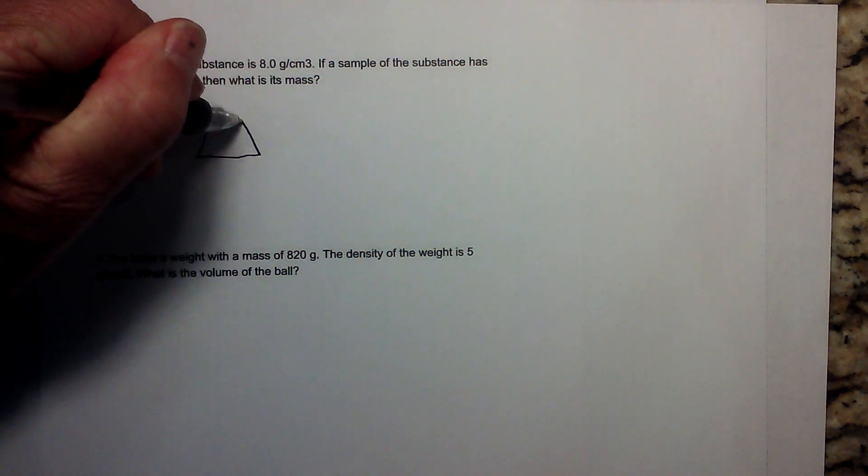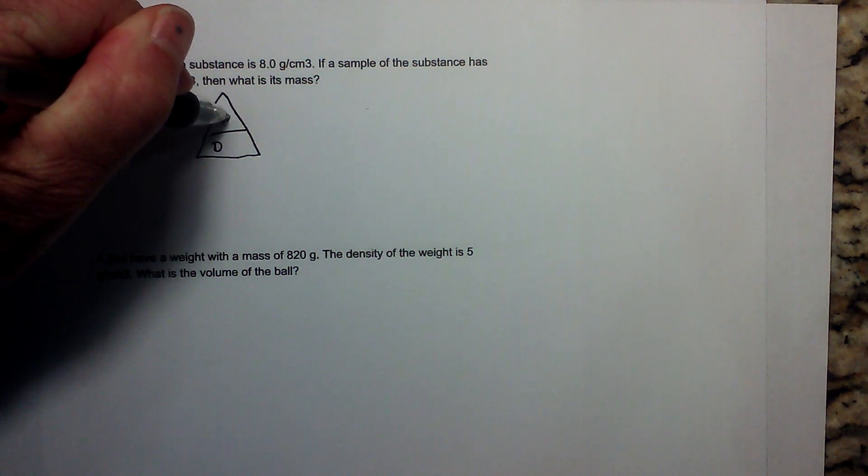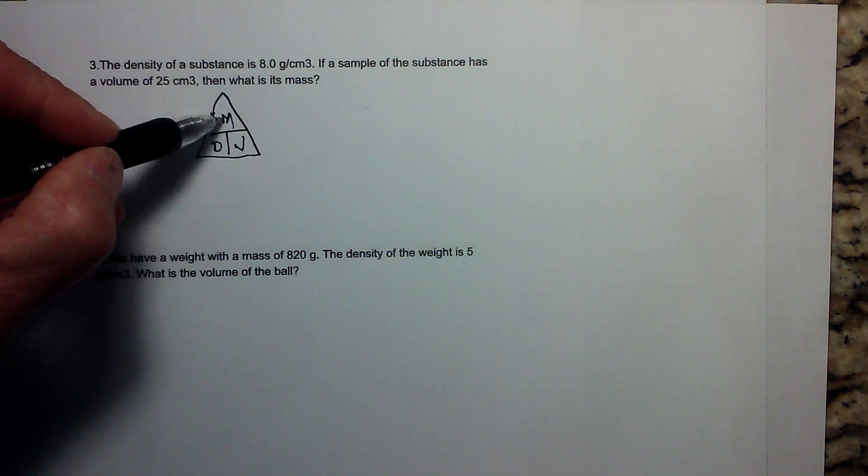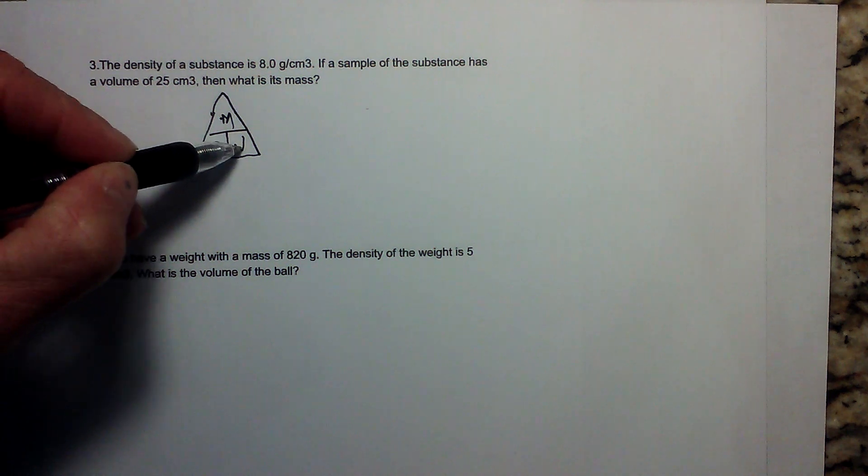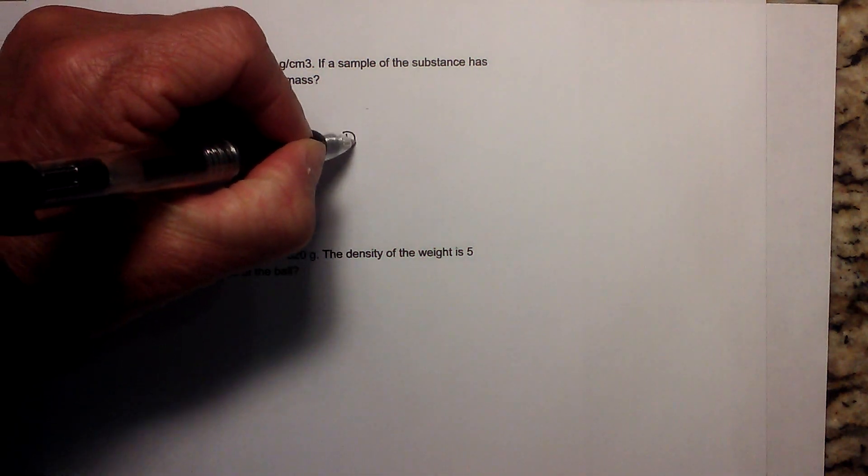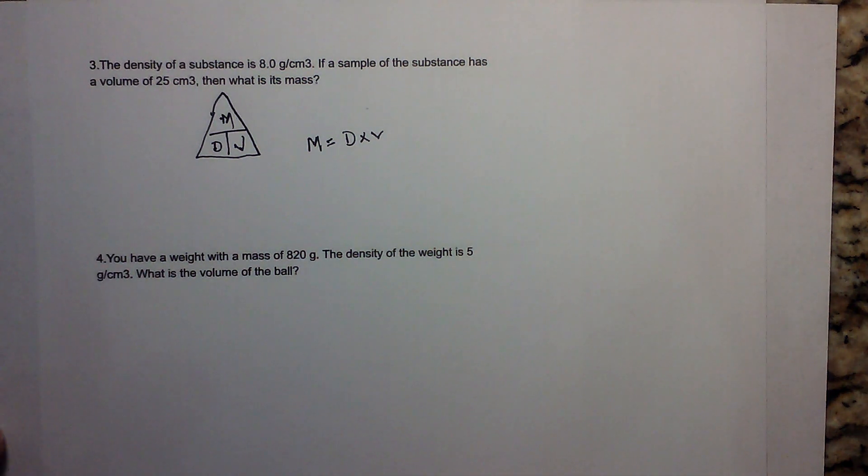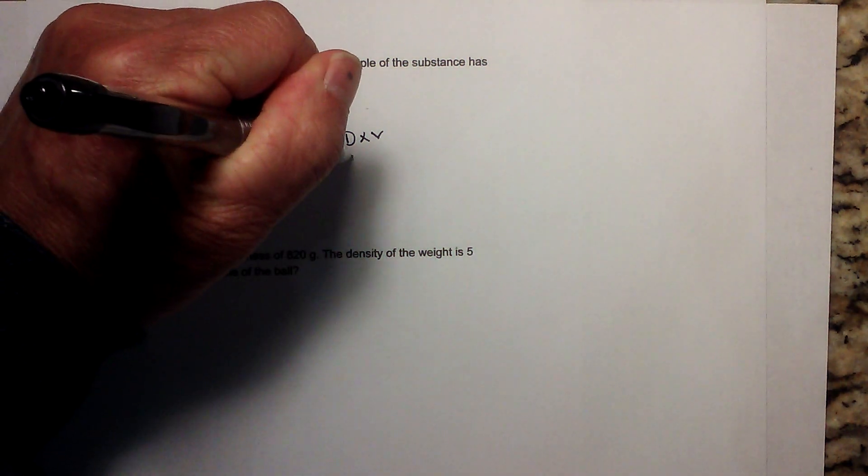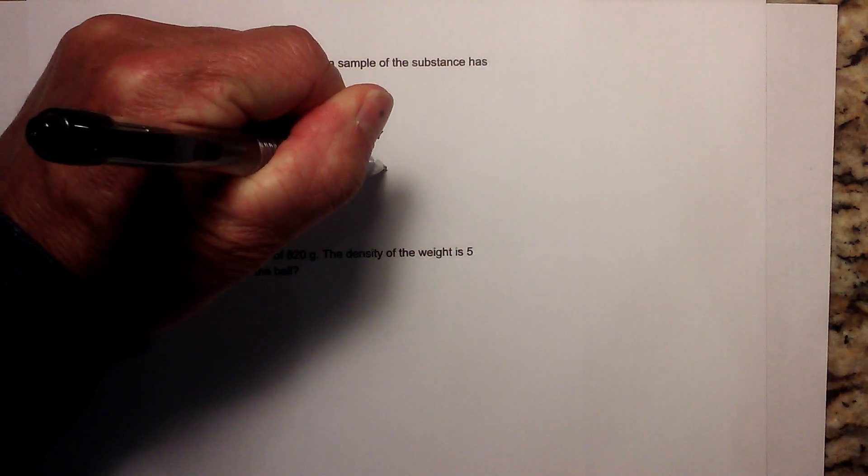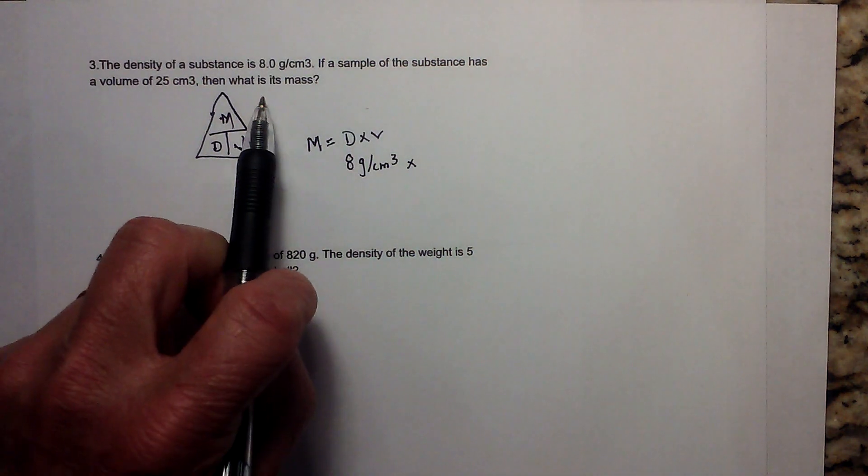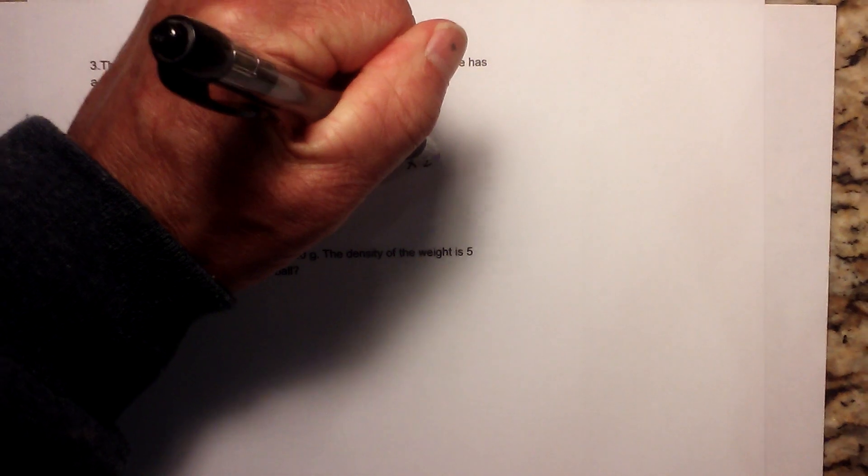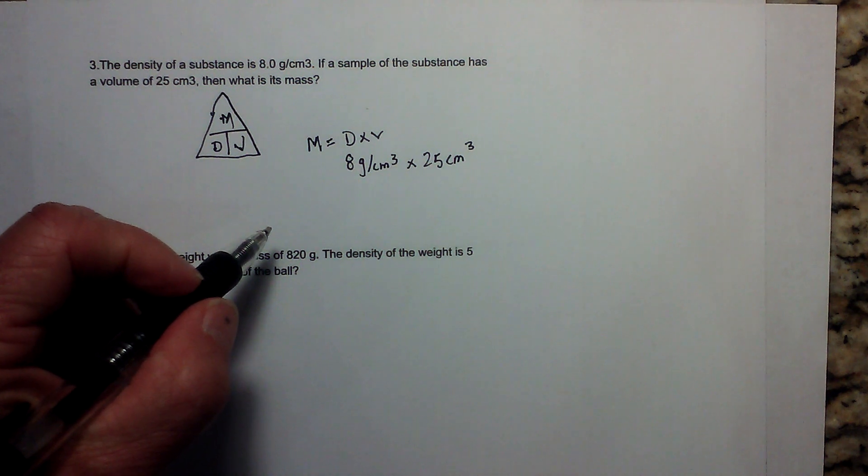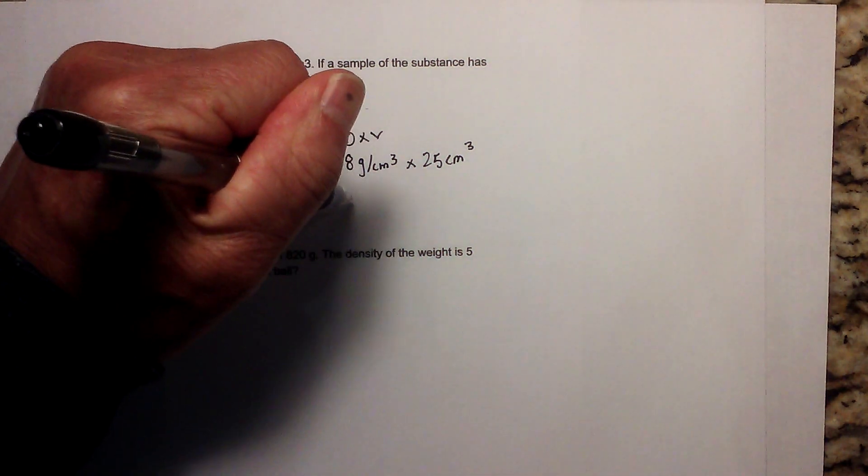Again I'm going to go to the DMV, and I am looking for mass. Mass is here, so it's just density times the volume. I'm going to put mass equals D times V. Now all I have to do is plug in the numbers. I know that the density is 8 grams per centimeters cubed times the volume, which is 25 centimeters cubed. When you multiply that, 8 times 25 is 200.